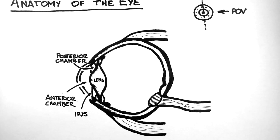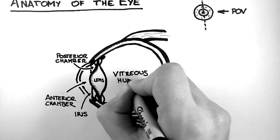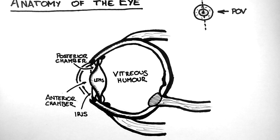The lens then sits in behind the iris and forms the posterior wall of the posterior chamber. Behind the lens lies a large space called the vitreous chamber, which is filled with a gelatinous substance called the vitreous humour — not to be confused with the aqueous humour in the anterior and posterior chambers.